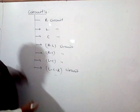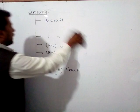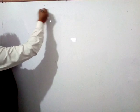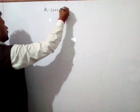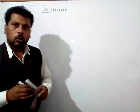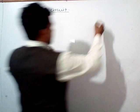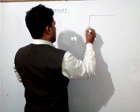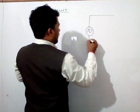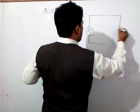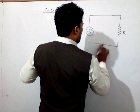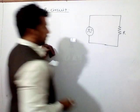Let me discuss the R-circuit first. This is a circuit where only an ohmic resistor is attached — an AC circuit with only a resistance R.